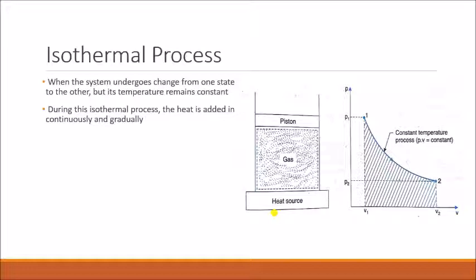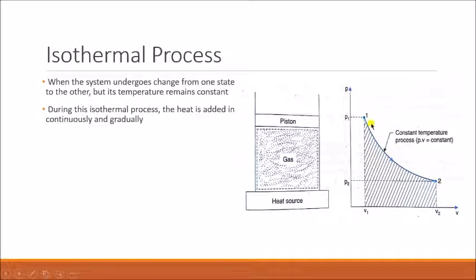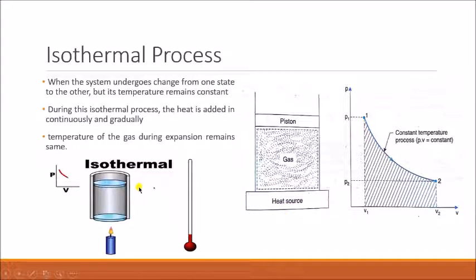This process is plotted on a PV diagram. Point 1 is the initial state and point 2 is the final state. The arrow moves downward from point 1 to point 2 — when the arrow moves downward we say the process is expansion, and when it moves upward we say it is compression. As heat is supplied, the gas expands: the pressure decreases and the volume increases, until it reaches point 2.